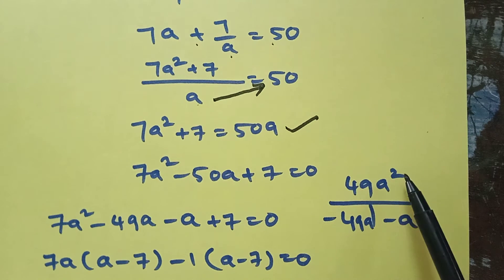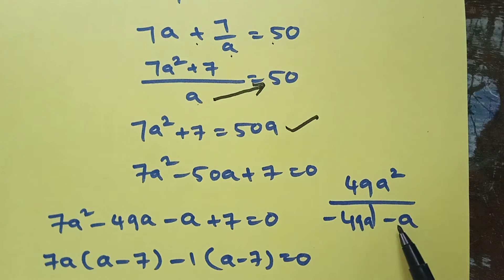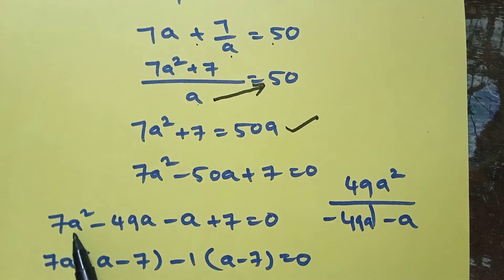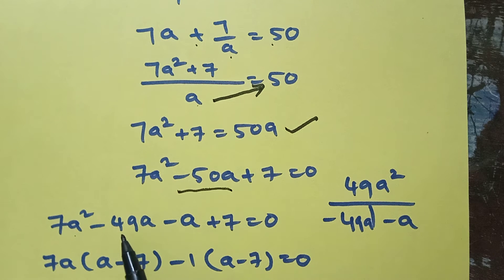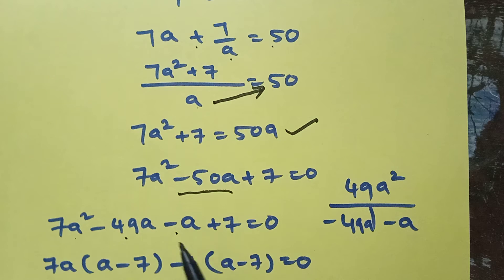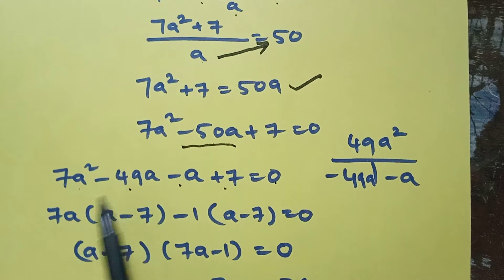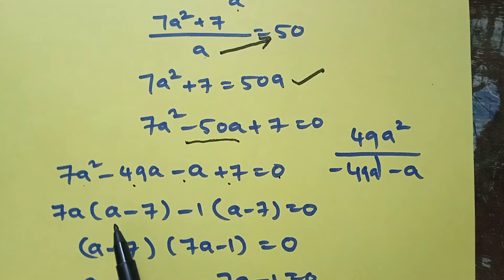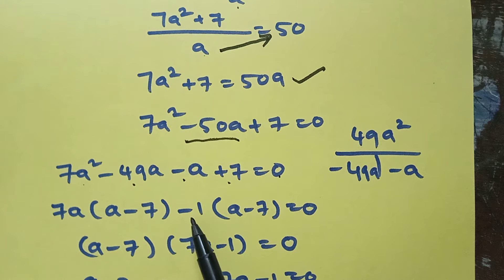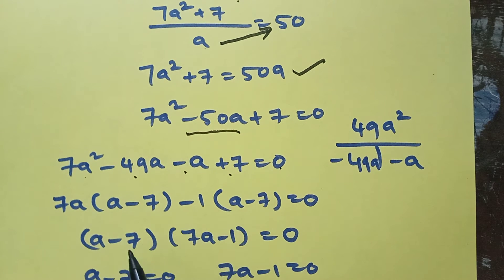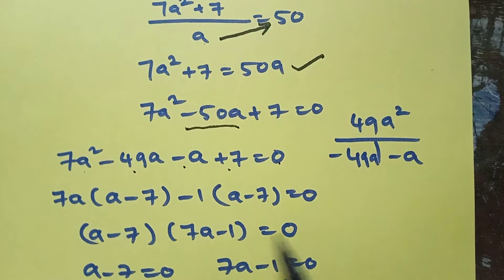Writing 50a on the left side gives the quadratic equation. Split minus 50a into minus 49a minus a. So 7a squared minus 49a minus a plus 7 equals 0. From the first two terms, take 7a common to get (a minus 7), and from the last two terms, take minus 1 common to get (a minus 7).